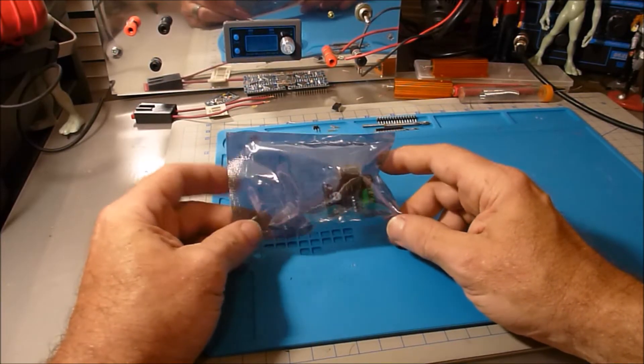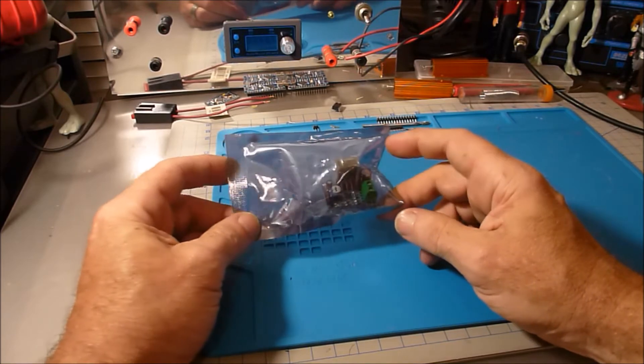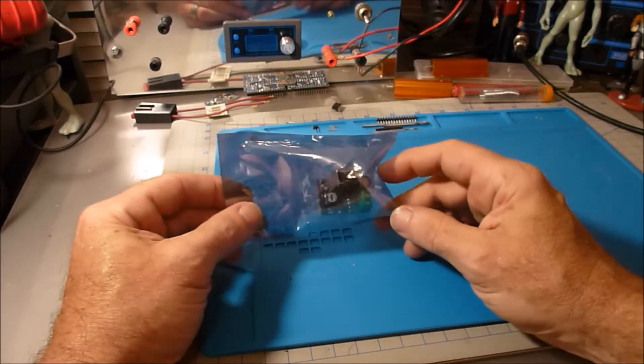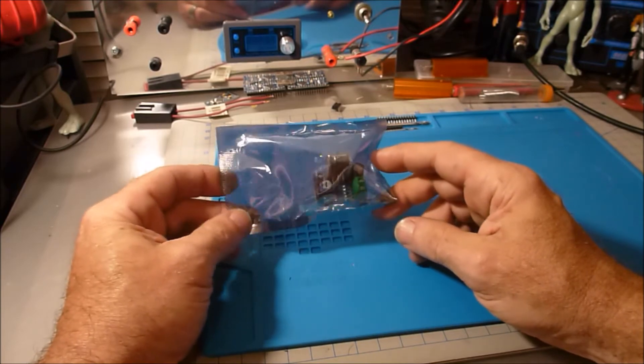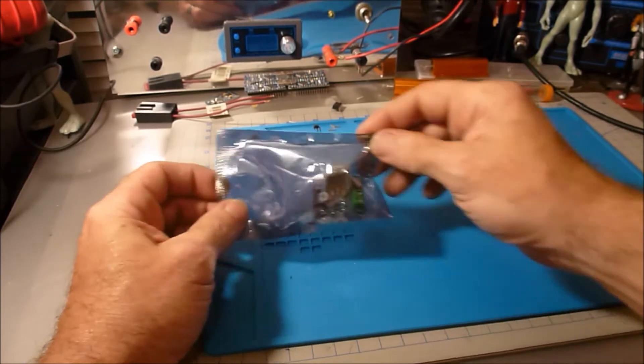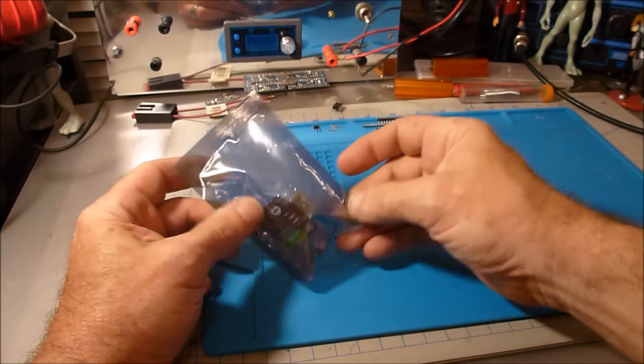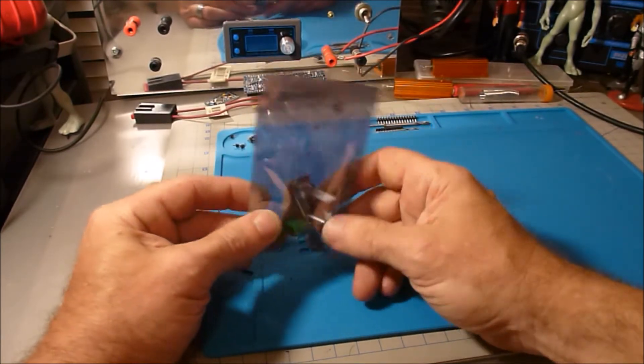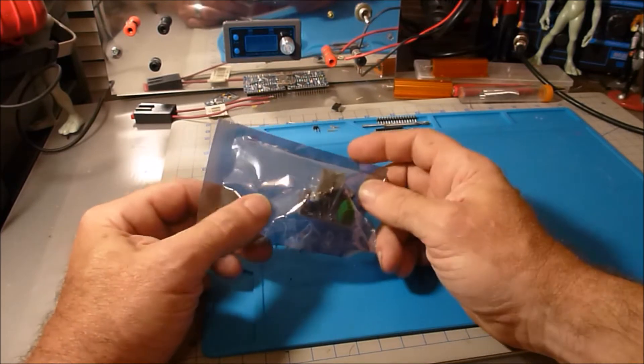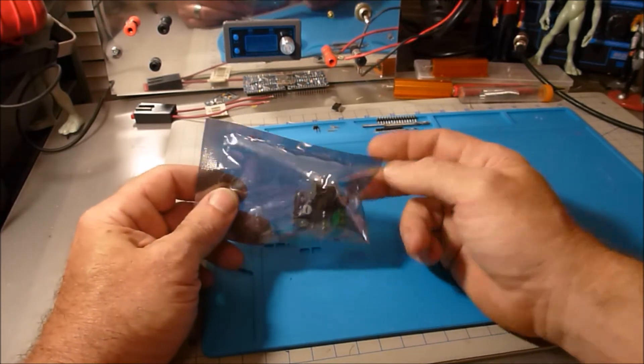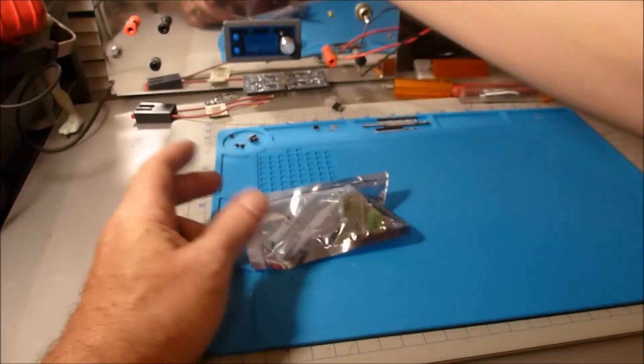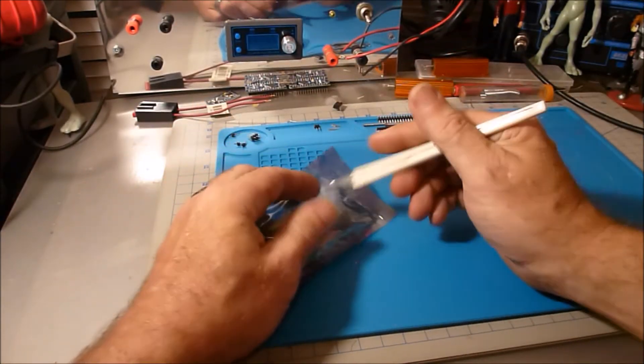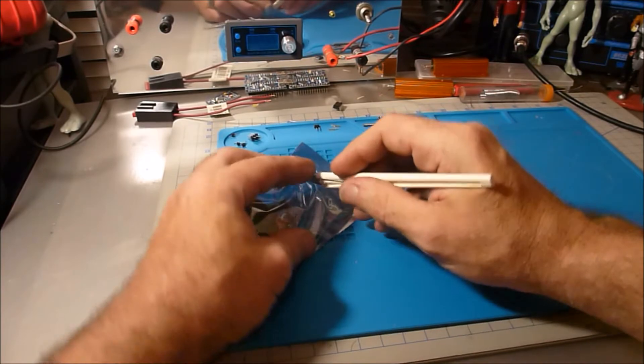I went to Jeff Bezos online store and purchased five of these TDA 2030A circuits, these amplifiers. I got them, you get a lot of five for about eight dollars or something like that, roughly a buck fifty a piece or somewhere in that neighborhood. I figured let's check them out.